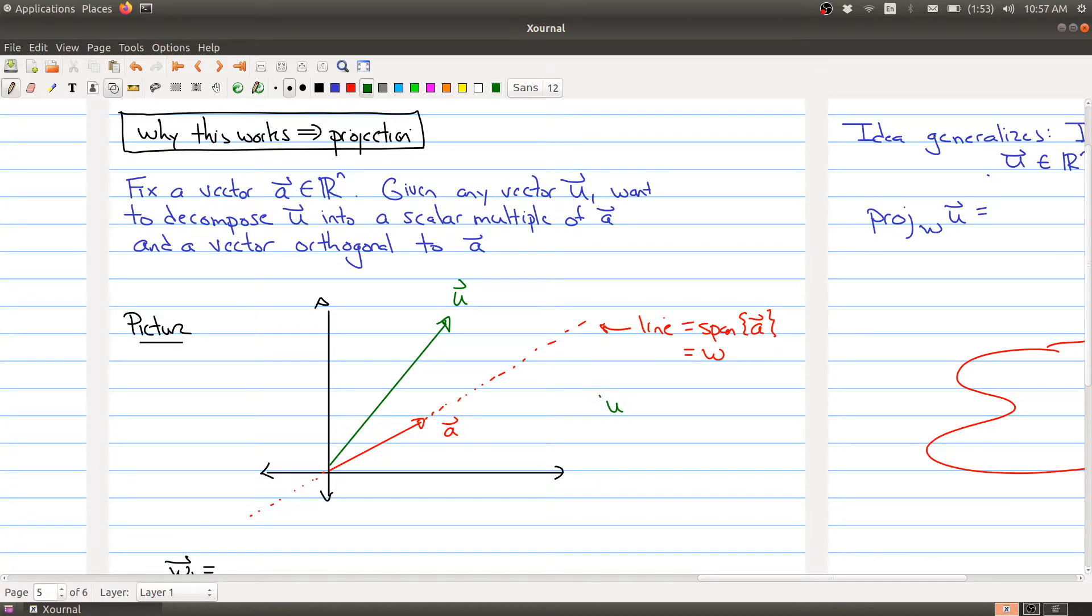We want to write u as w1 plus w2, where w1 we want it to be a scalar multiple of a, and then w2 is orthogonal to a. One way to visualize what's being asked here is, you can think about a flashlight.